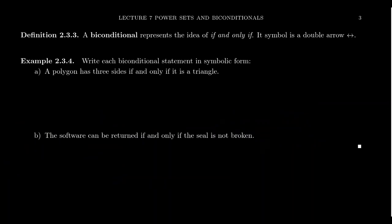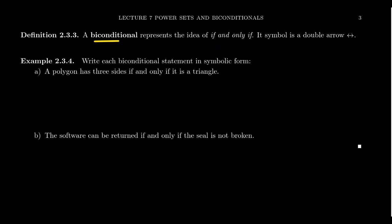With that in mind, we now introduce what it means to be a biconditional statement. A biconditional statement represents the idea of 'if and only if,' often abbreviated as IFF. The symbol we use is a double arrow: P ⟺ Q. This means P if and only if Q, and it is the same as saying P implies Q — the conditional statement — and Q implies P — its converse.